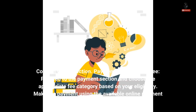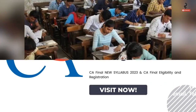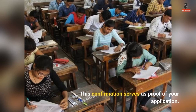Step 5 - Payment of application fee: Confirm your selection, then proceed to the payment section and choose the appropriate fee category based on your eligibility. Make the payment using the available online payment options, following the instructions provided. After successful payment, you will receive a confirmation message or email. Take a printout of the confirmation page or save a digital copy for your records.